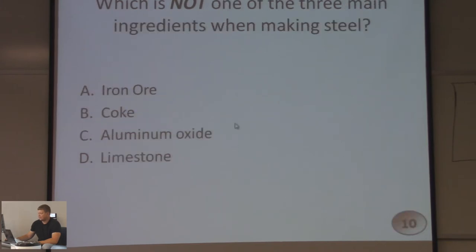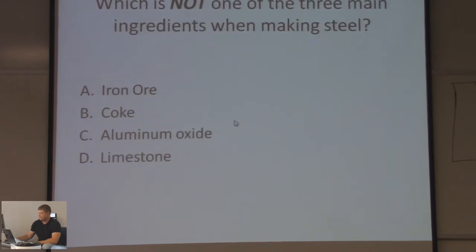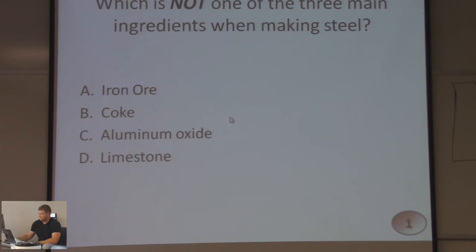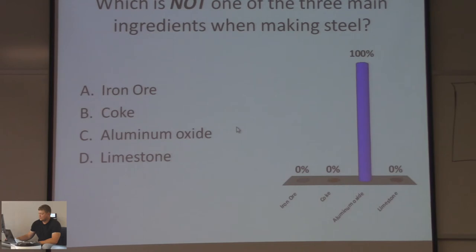Which is not one of the three main ingredients when making steel? Iron ore, coke, aluminum oxide, or limestone? Aluminum oxide is not one of the three main materials. The three main ingredients when making steel are iron ore, coke — which is basically pure carbon — and limestone.